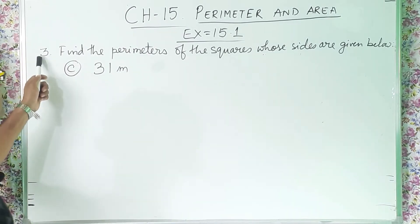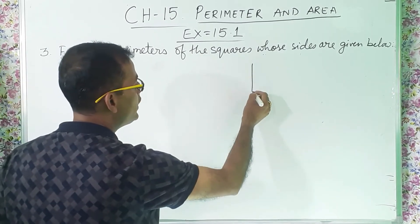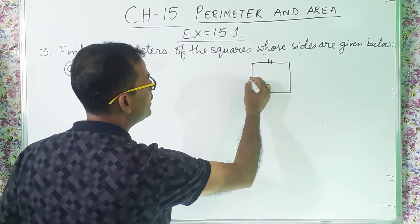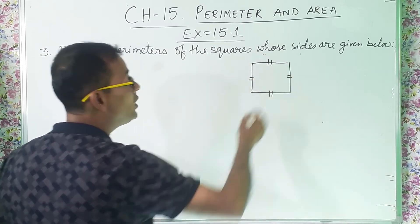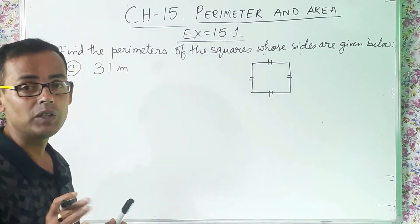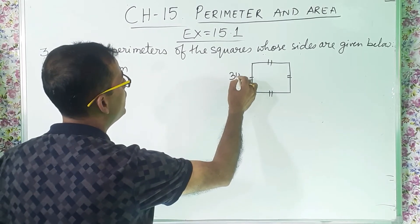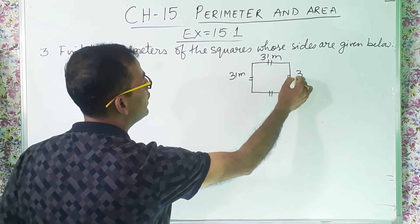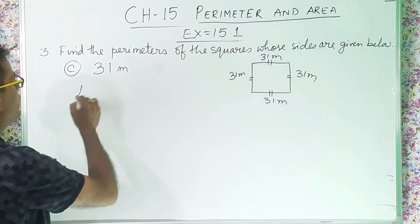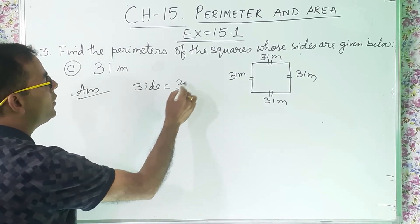Now question number 3C: 31 meter. Again, I will draw one diagram like this. This is a square — 4 sides are equal, the diagonals are also equal, and the 4 angles are also equal, that is 90 degrees. So all sides are 31 meter, 31 meter, 31 meter, 31 meter.